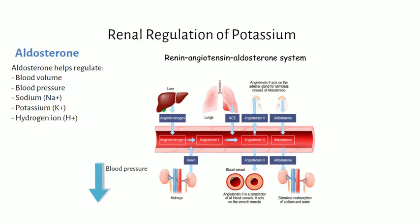Decreased blood pressure, blood volume, and sodium concentration stimulate the release of renin from the juxtaglomerular, or JG, cells in the kidney. Sympathetic nervous system activity, such as with the stress response, also signals the release of renin. Renin is released into the blood where it converts angiotensinogen, which is produced by the liver, into angiotensin 1. Angiotensin 1 then travels to the lungs, where it encounters angiotensin-converting enzyme.